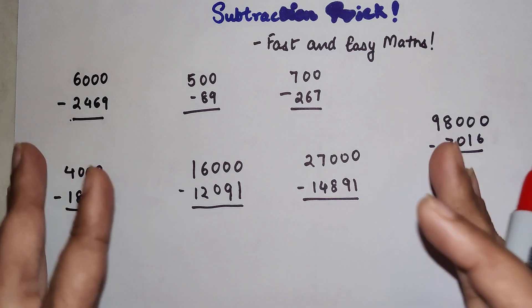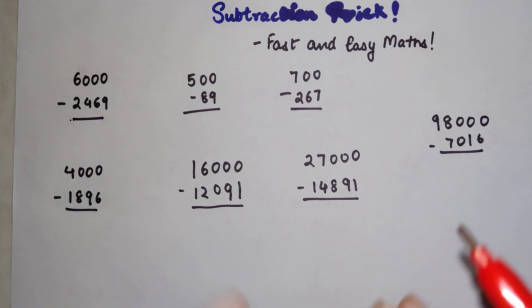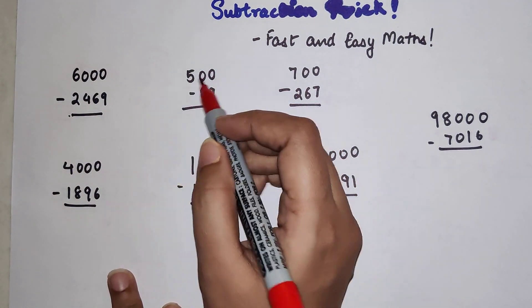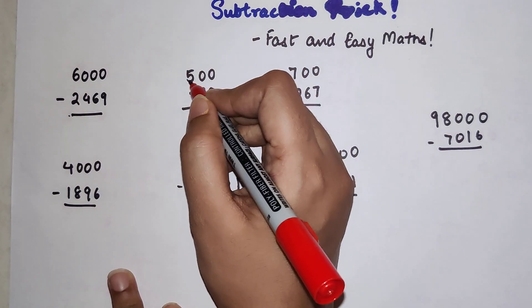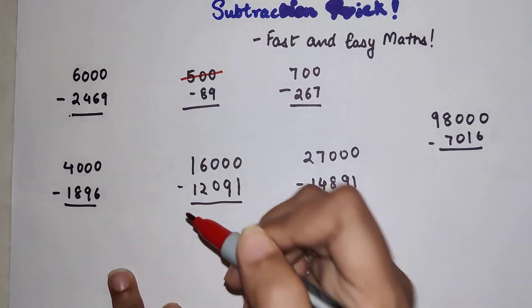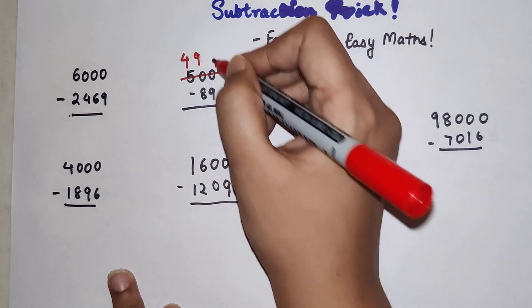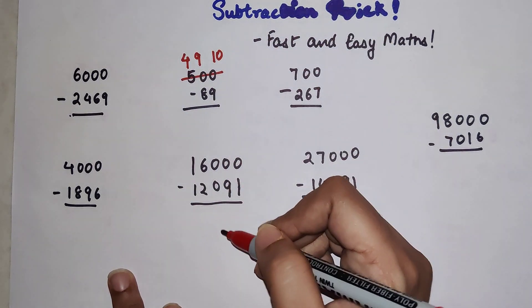I am going to show you really big numbers as well, but just to understand the trick, let's start with a smaller one like 500. When you subtract 89 from 500, how do you do this? So here, instead of 500, what you should do is make this as 4, 9, and the last digit will get subtracted from 10. That's it.